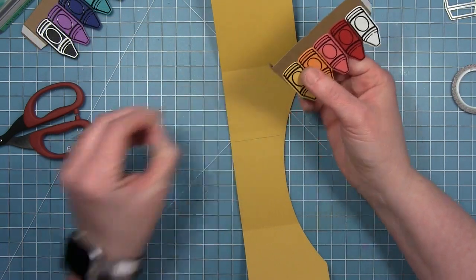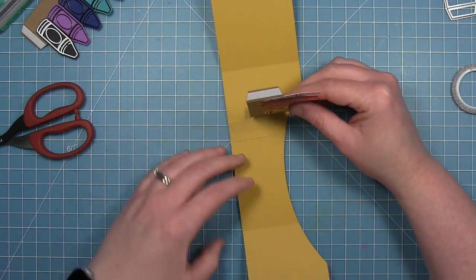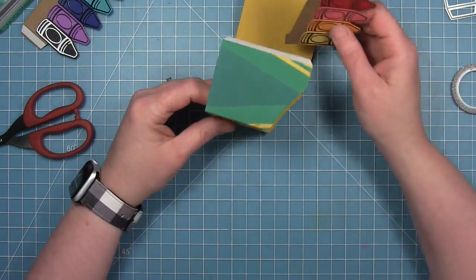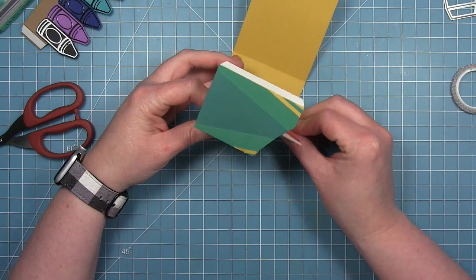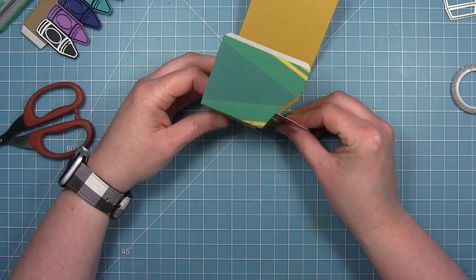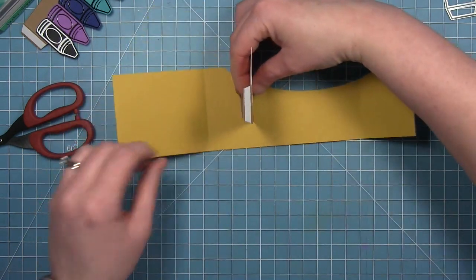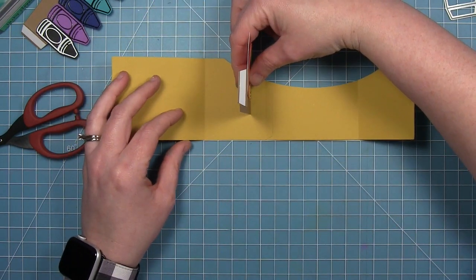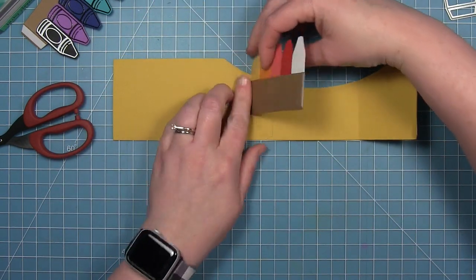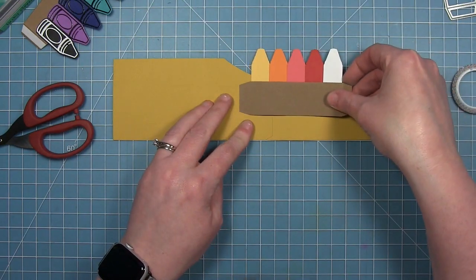So now that my crayons are on there I can line on my inserts. So it's hard to see here what I'm doing but I'm looking at it so I can see I want my crayons to peek out the top so I'm looking at it with that arch to figure out kind of where I want it.